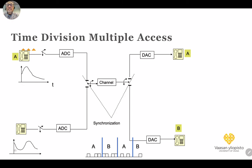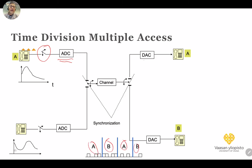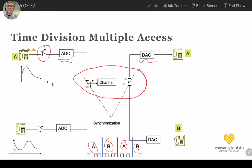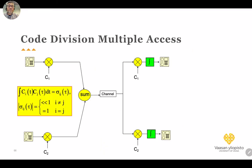In TDMA, the analog signal is converted by an analog-to-digital converter, producing digital samples. The channel switches between A and B, taking samples alternately. At the receiver, a digital-to-analog converter recovers the signals. Synchronization between transmitter and receiver is essential to know which time slot belongs to A and which belongs to B.